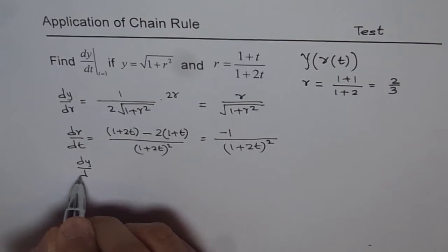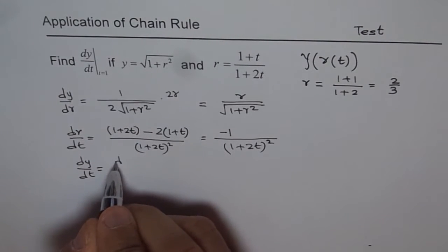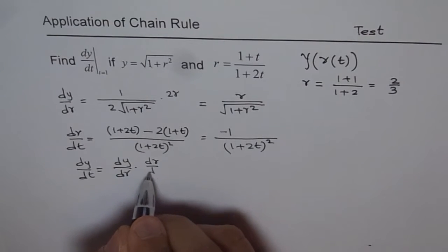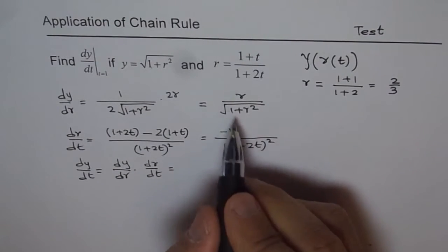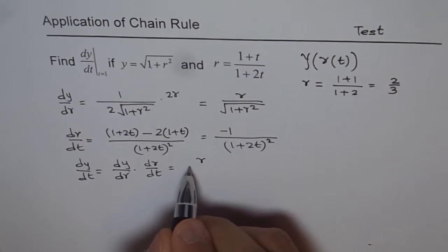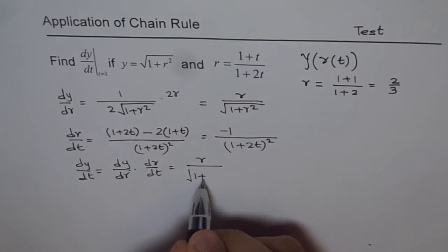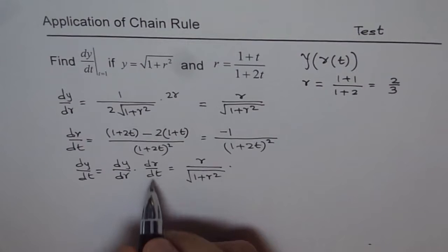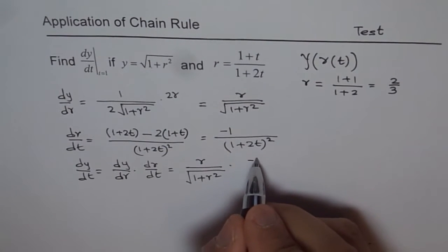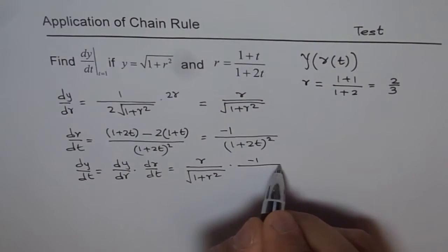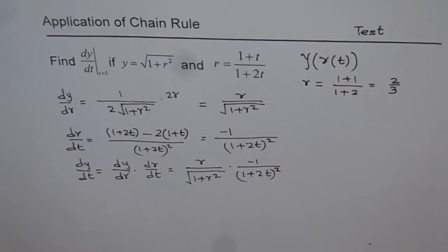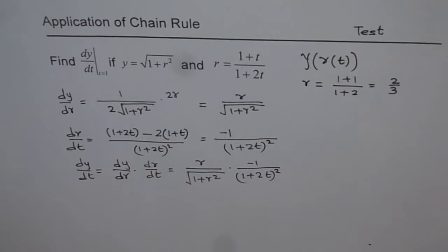By the chain rule, dy/dt equals dy/dr times dr/dt. So dy/dt equals r over the square root of (1 plus r squared), times minus 1 over (1 plus 2t) squared.